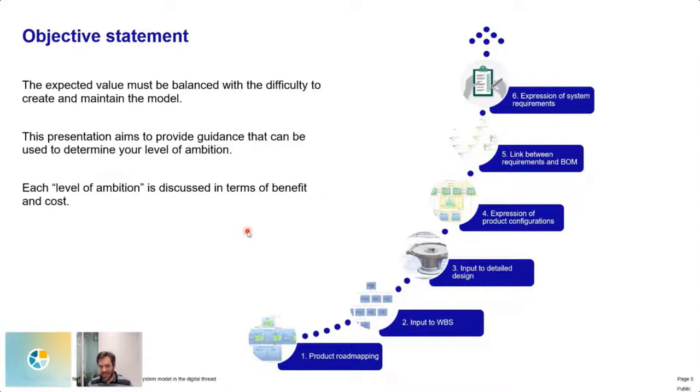So I put that together into a central question: What role does the system model play in the digital thread? The objective for this presentation is to provide some guidance. You have to balance the benefit and the cost, and it would be helpful if you had some guidance to articulate the type of benefits and costs you can expect here. I structured this in what I just call a ladder of ambition or levels of ambition. This is really just a structuring of some experience and knowledge we've gained over the last few years in implementing and adopting model-based systems engineering in a configuration management approach. So these are the six levels of ambition, as I call them, and I will be going through each of them.